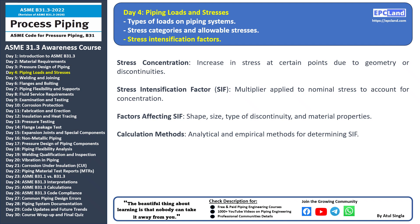Stress intensification factors play a crucial role in understanding how stress concentrates at specific points in a piping system. Stress concentration — imagine bending a paperclip; you'll notice that the stress is higher at the bends. This increase in stress at certain points due to changes in geometry or the presence of discontinuities like welds, fittings, or changes in pipe size is known as stress concentration.